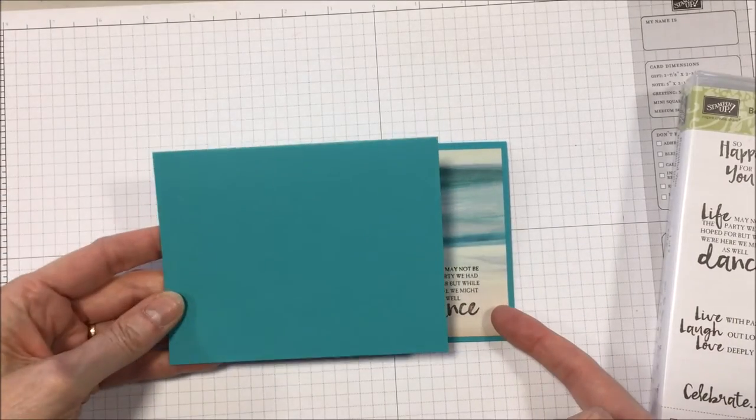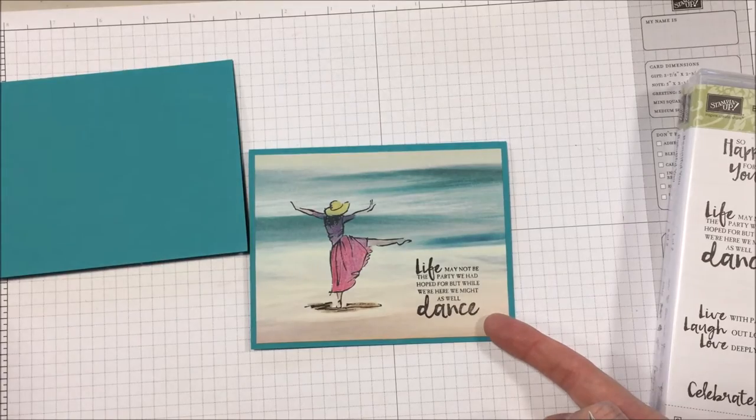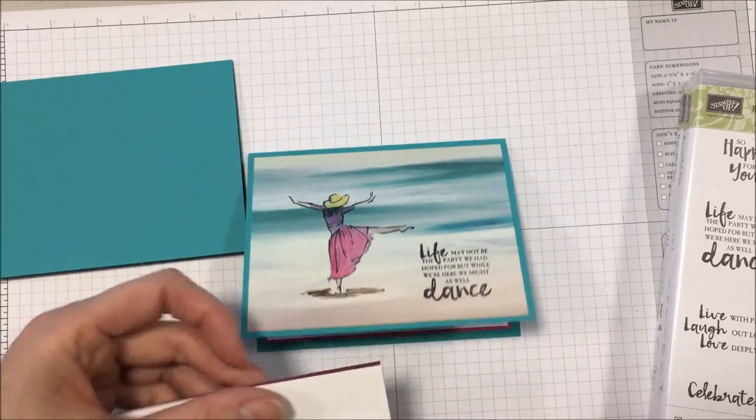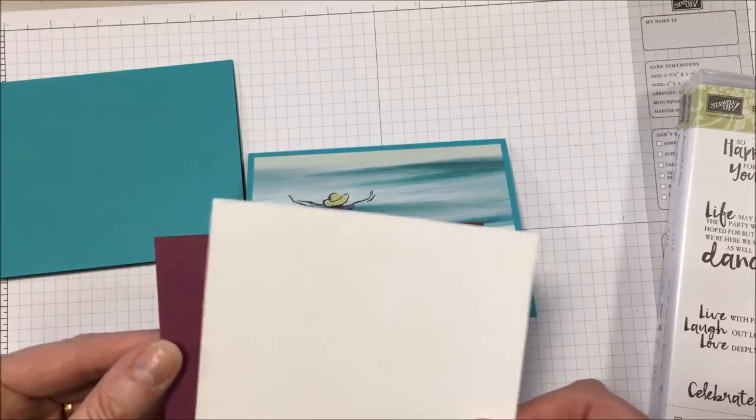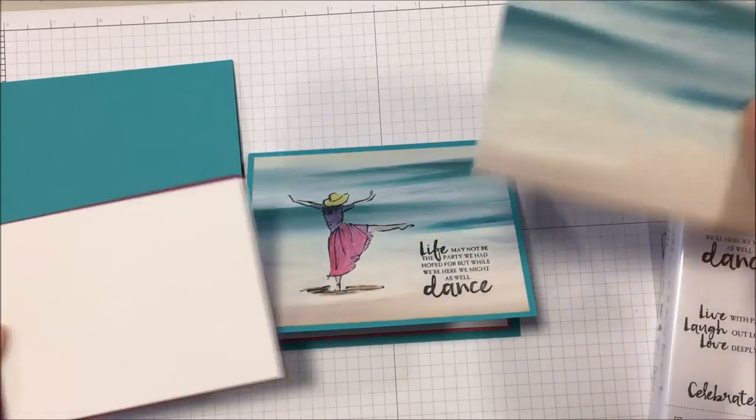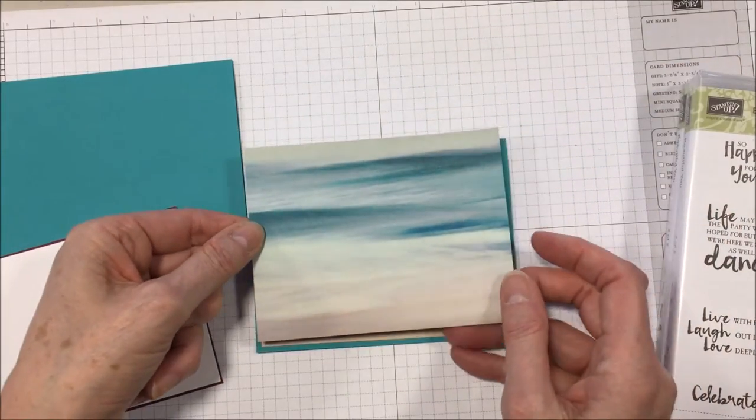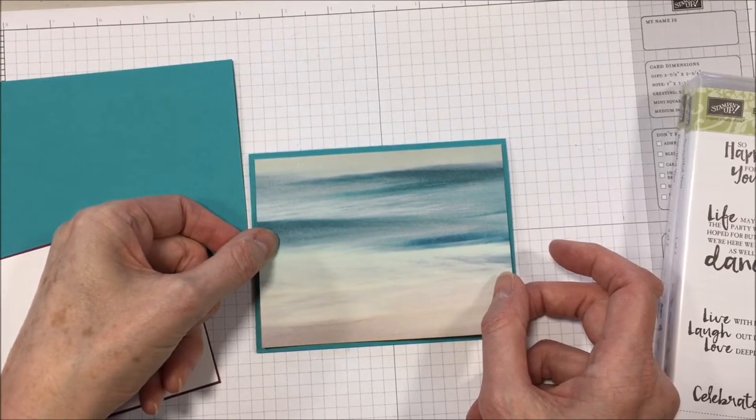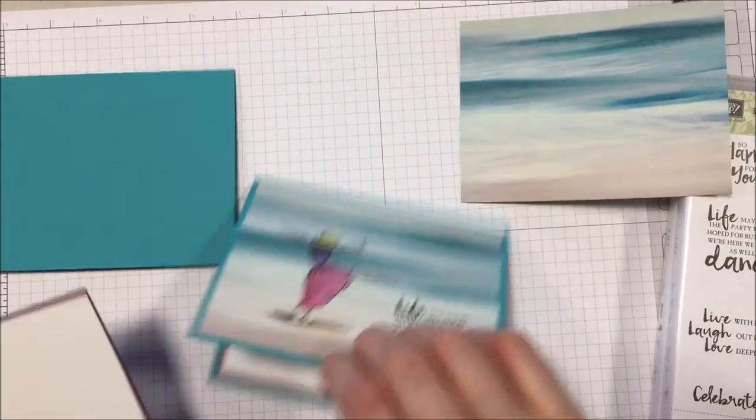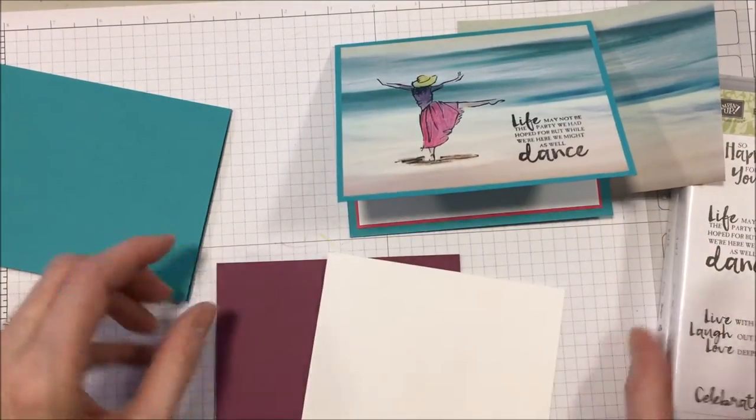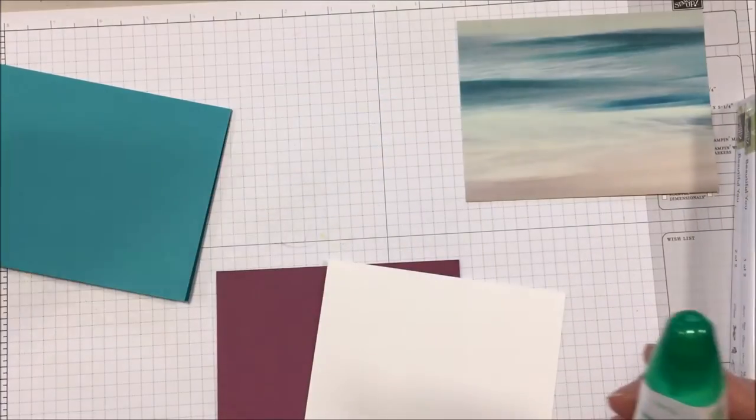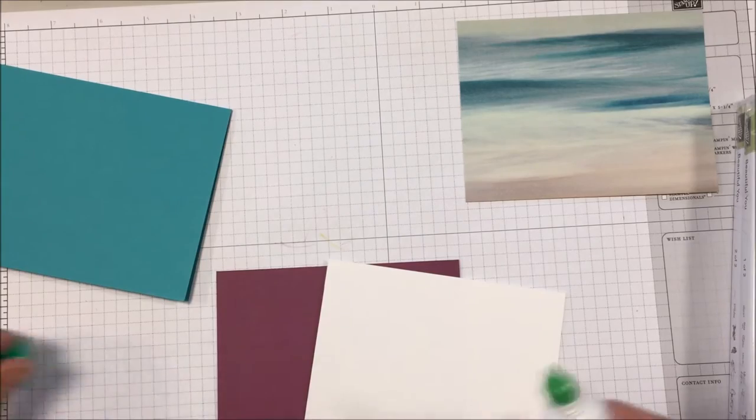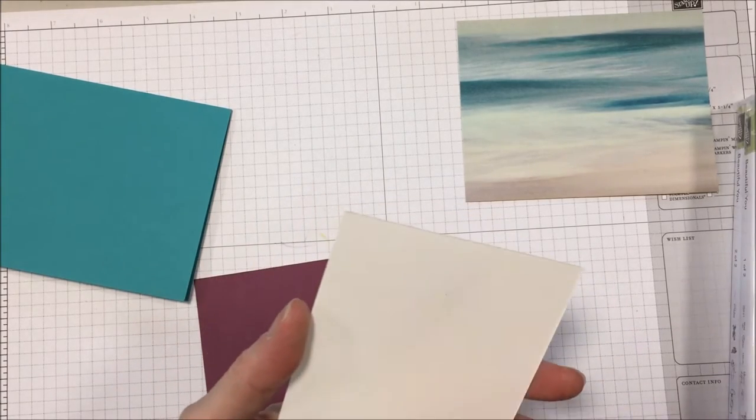The base of the card is Bermuda Bay, eight and a half by five and a half, scored at four and a quarter. And these two are for the inside. And I have already cut the six by six down to five and a quarter by four. So I'm going to start off doing the inside. I'm just going to quickly do this.